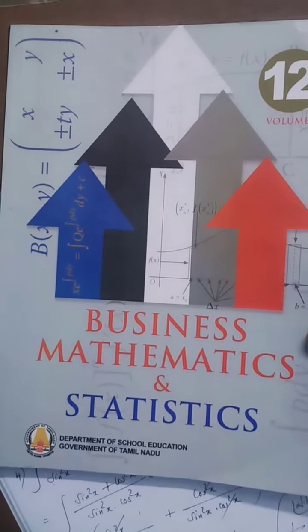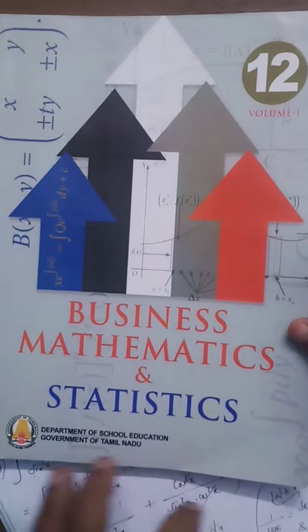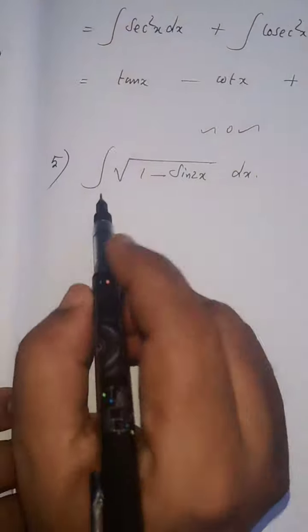Hi students, this is Sivakumar. 12th standard business mathematics and statistics, chapter number 2 continuation, exercise 2.4, last problem, problem number 5.